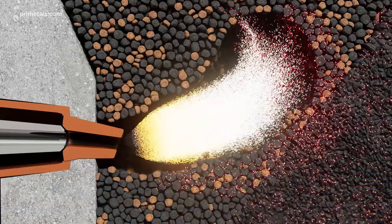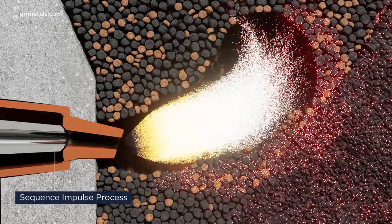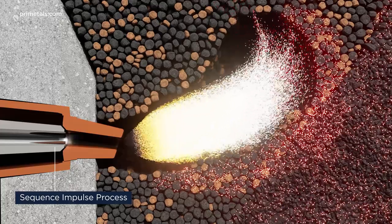SIP technology introduces a high-pressure oxygen lance alongside the coal injection lance. This intermittently pulses a high-energy shockwave of oxygen into the furnace through the Tuir.